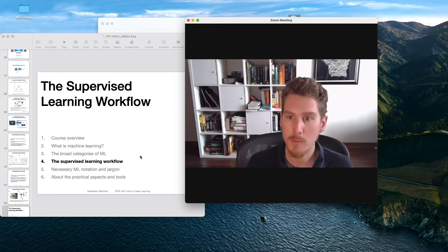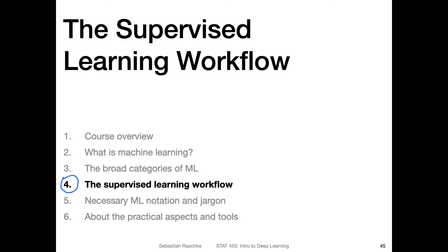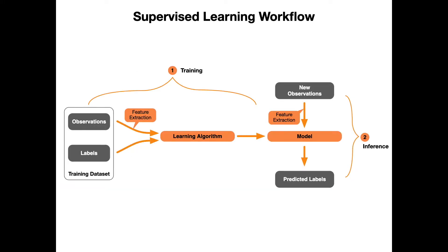Let me talk a little bit more about the supervised learning workflow. We will be using supervised learning a lot in the next couple of weeks. Supervised learning, as you remember from the previous videos, is the process of regression or classification. There are essentially two steps: one is the training step where we train a machine learning model, and the second step is the inference step.